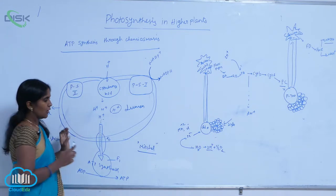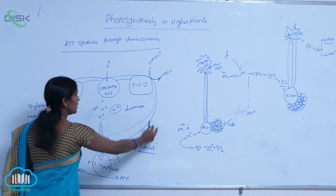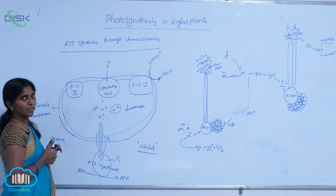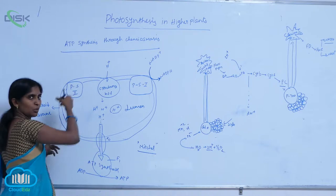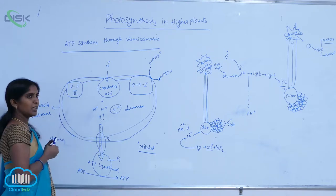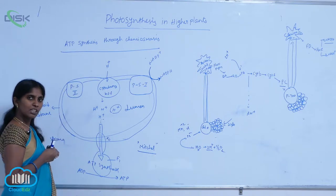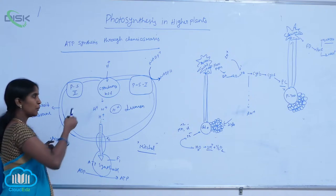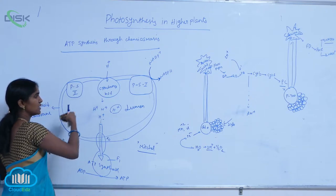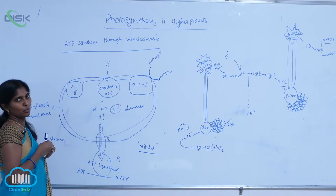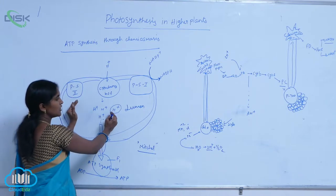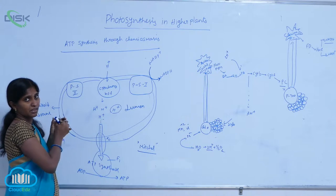From the stroma, protons also enter the lumen through the quinone cycle, and during water splitting, protons are released and remain inside the lumen. This means the concentration of protons inside the lumen is continuously increasing.